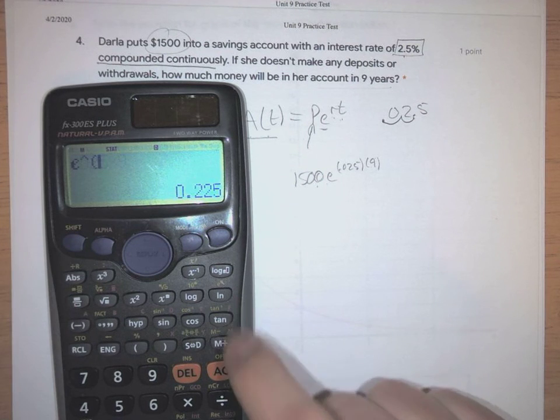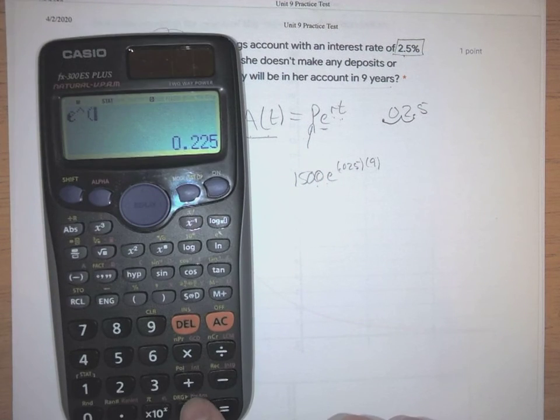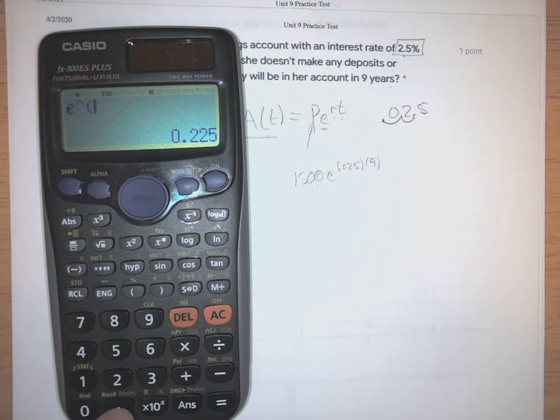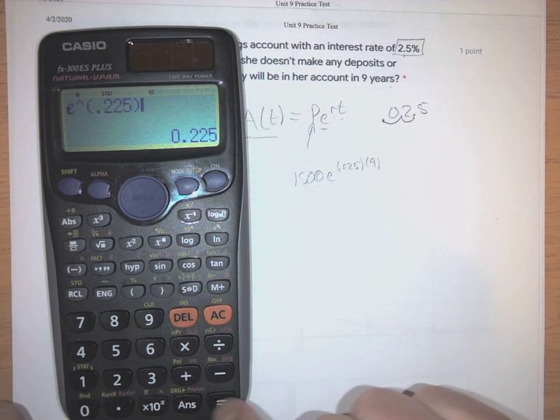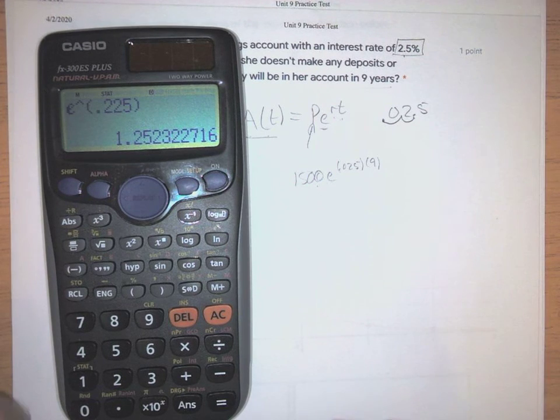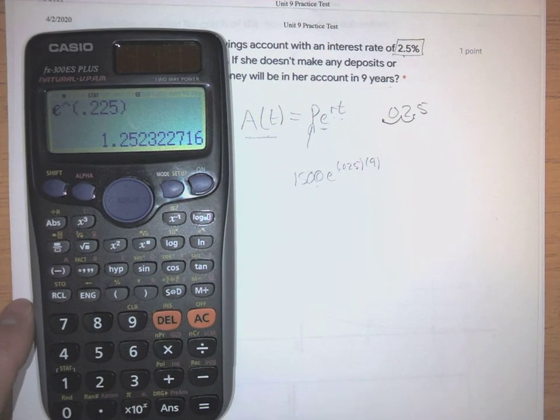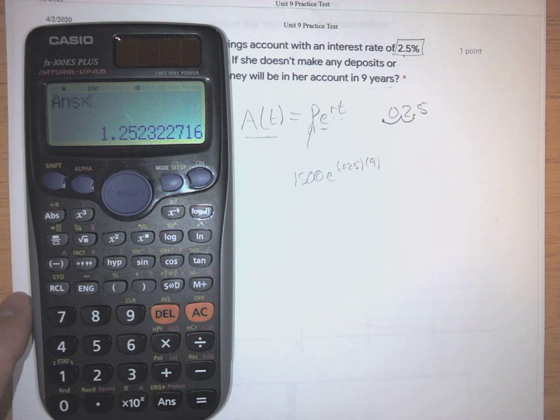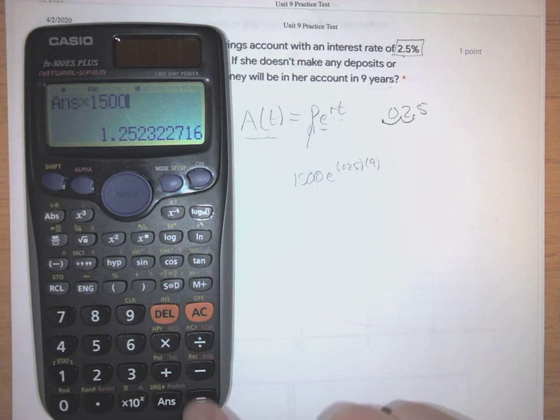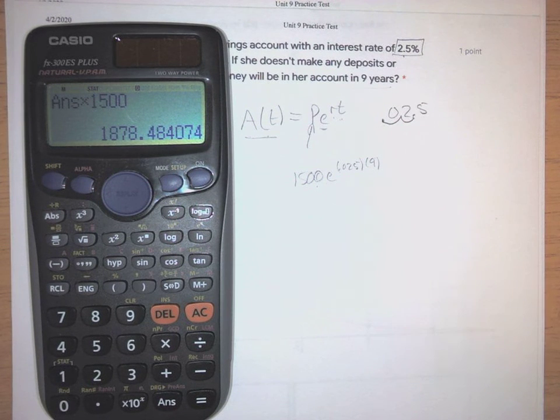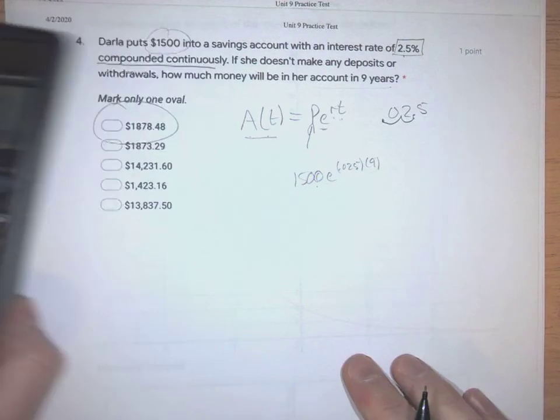So I'm going to go e to the, you can either do answer, hit the answer key, or you could just type .225. And now I want to multiply that number times 1,500. You could write that down, or you could just hit times 1,500. And it's going to give you the same thing. So whether you want to do it a piece at a time, or all in one shot, you get the same answer.